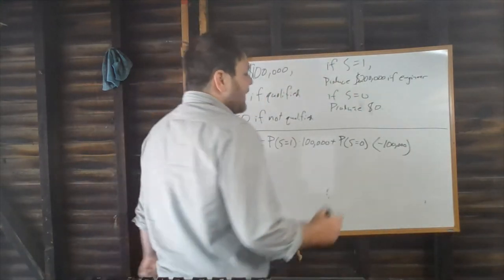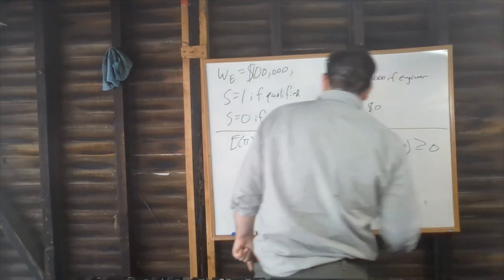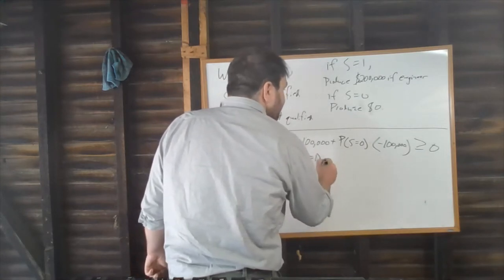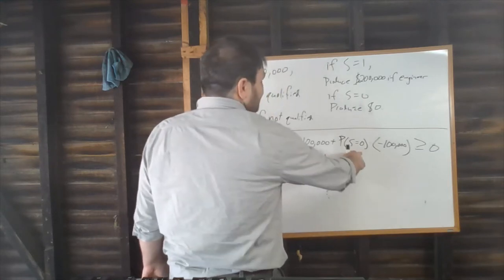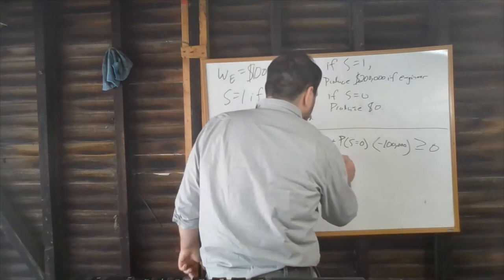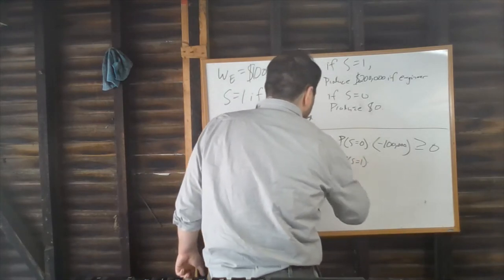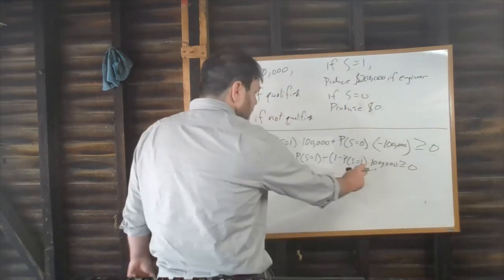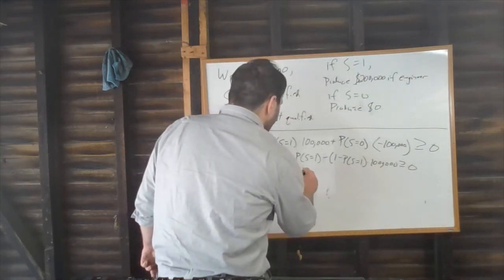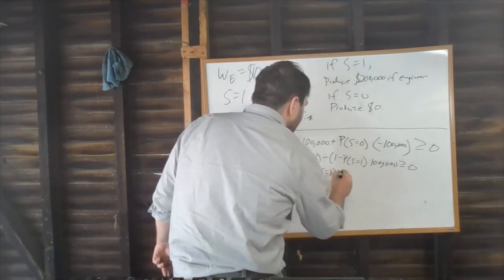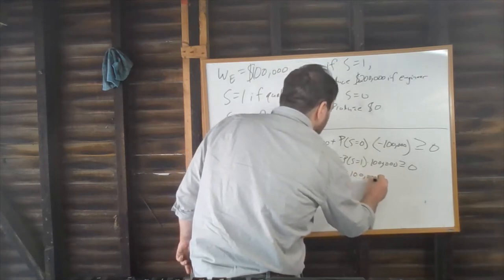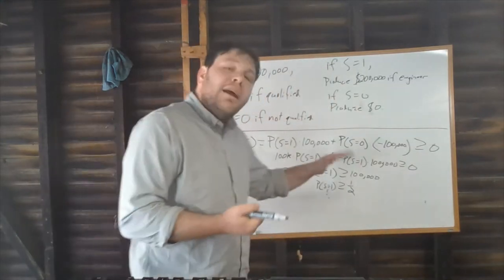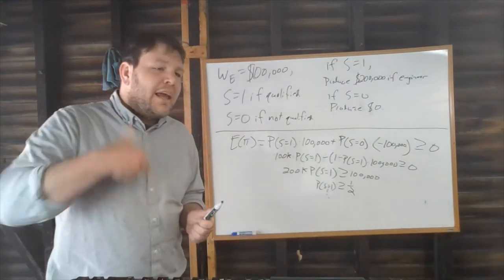The firm will hire a worker as long as their expected profit is greater than or equal to zero. This means: $200,000 × probability(S=1) ≥ $100,000, so they hire as long as the probability that S=1 is greater than or equal to one-half. In other words, if it's more likely than not that a worker is actually qualified to be an engineer, it's in the firm's interest to hire that worker.